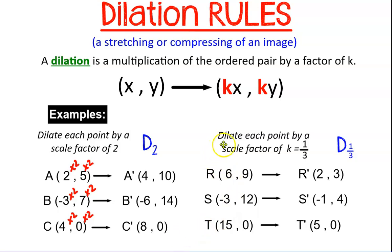Now over here, my second example, it says dilate each point by a scale factor of 1/3, or dilate by 1/3. I merely take my original points and times them by the fraction 1/3. 6 times 1, divide by 3. 9 times 1, divide by 3. And that's how I get my prime points.